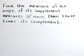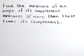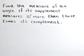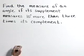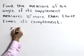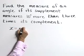Find the measure of an angle if its supplement measures 10 degrees more than 3 times its complement. Let's start by defining our variable and let x represent the measure of our unknown angle.